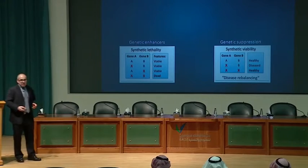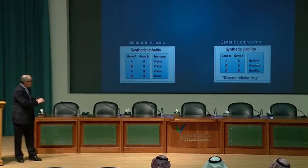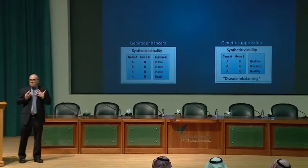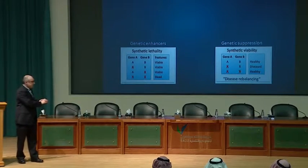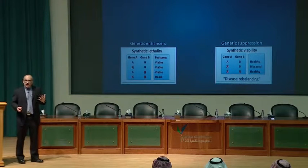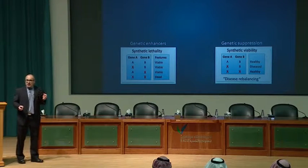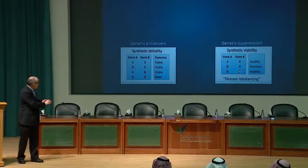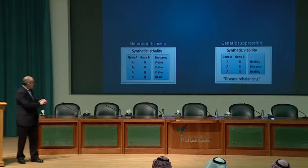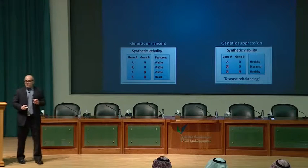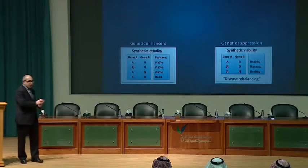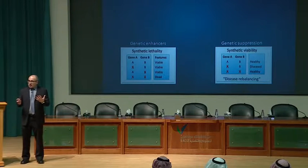The other end of the extreme is when a gene A defect causes disease or death at the cellular or whole organism level. This genetic principle, which has been around since the 1930s through studies in Drosophila, worms, and yeast, is that knocking out gene B can actually alleviate a disease state caused by a gene A defect. There are many ways biochemically to explain these genetic interactions, and they are very common in biology.